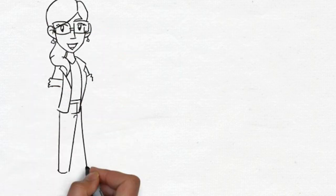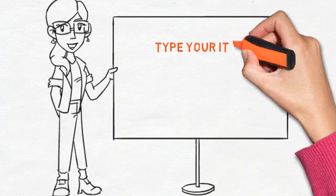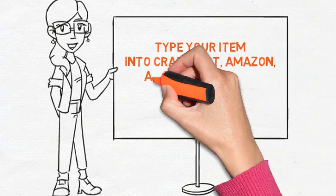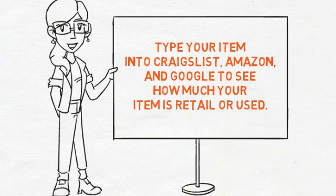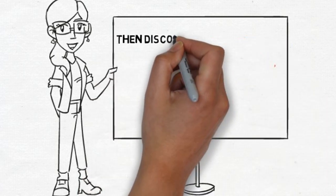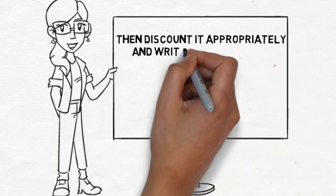For your sale items, it's time to do some self-appraising. Type your item into Craigslist, Amazon and Google to see how much your item is retail or used. Then discount it appropriately and write down the price.